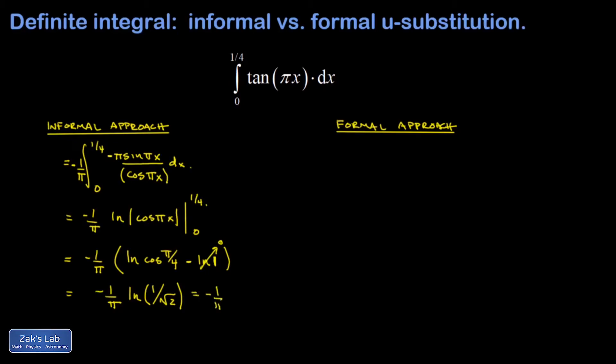So one over root two could be written as two to the negative one half. And I can move that power of negative one half out in front, and the minus signs are going to cancel, and I end up with one over two pi natural log two.